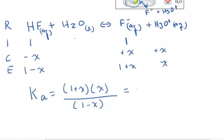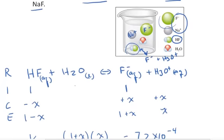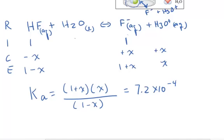The Ka for hydrofluoric acid, looked up in a table, is 7.2 times 10 to the minus 4. Now I need to solve for X. This is a bit complicated with the plus X and minus X terms, but recognize that the percent dissociation was only 2.7% even without the common ion present. With the common ion suppressing equilibrium further, X will be even smaller, so I can safely ignore X compared to one molar.